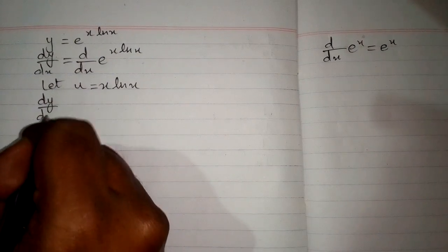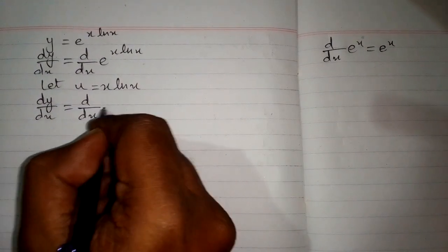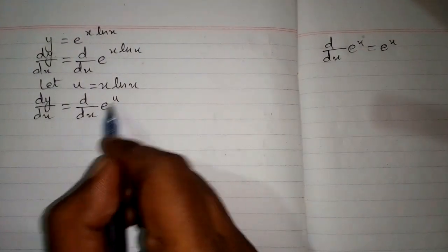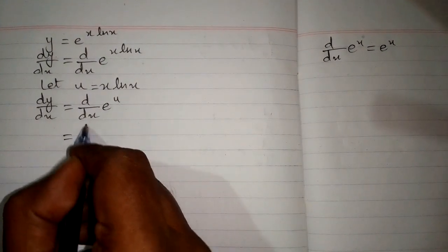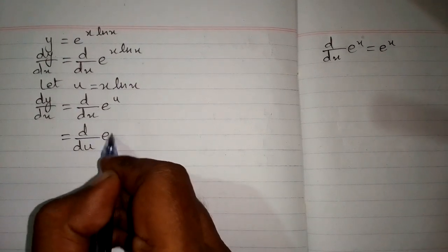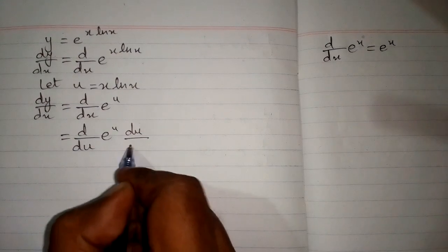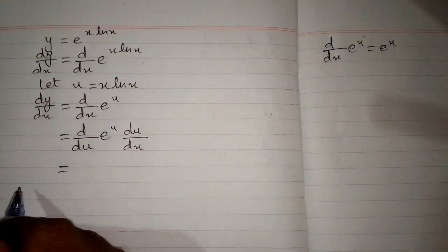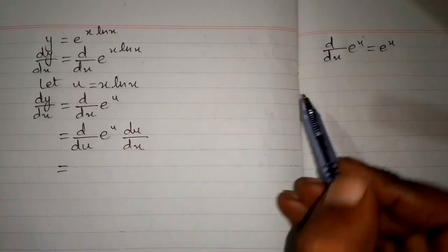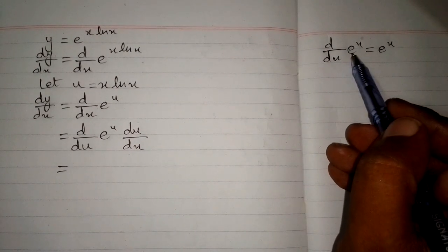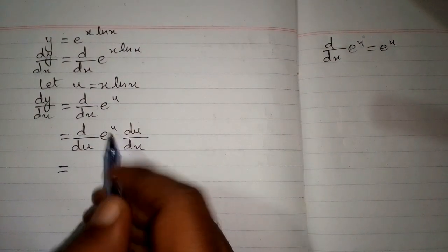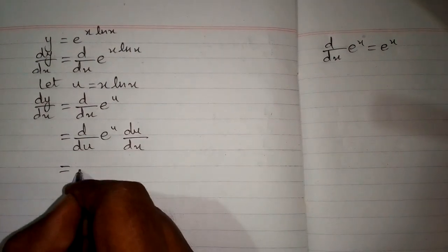So we have dy by dx is equal to d by dx of e to the power u. But again, we don't have the same variable, so we will apply the chain rule and replace dx by du and multiply by du by dx. Now we can apply the formula because this variable and this variable are the same — the derivative of e to the power u is e to the power u.